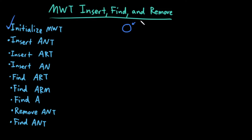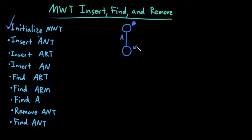Start at the root. So my current node is the root. I'm starting at the letter A. Does my current node have a child edge labeled by my current letter? Does this node have a child edge labeled by A? No, it does not. Therefore I must create one. Now it definitely does. So I traverse that edge. Now my current node is this node. I'm done with A, so my current letter is the next letter.